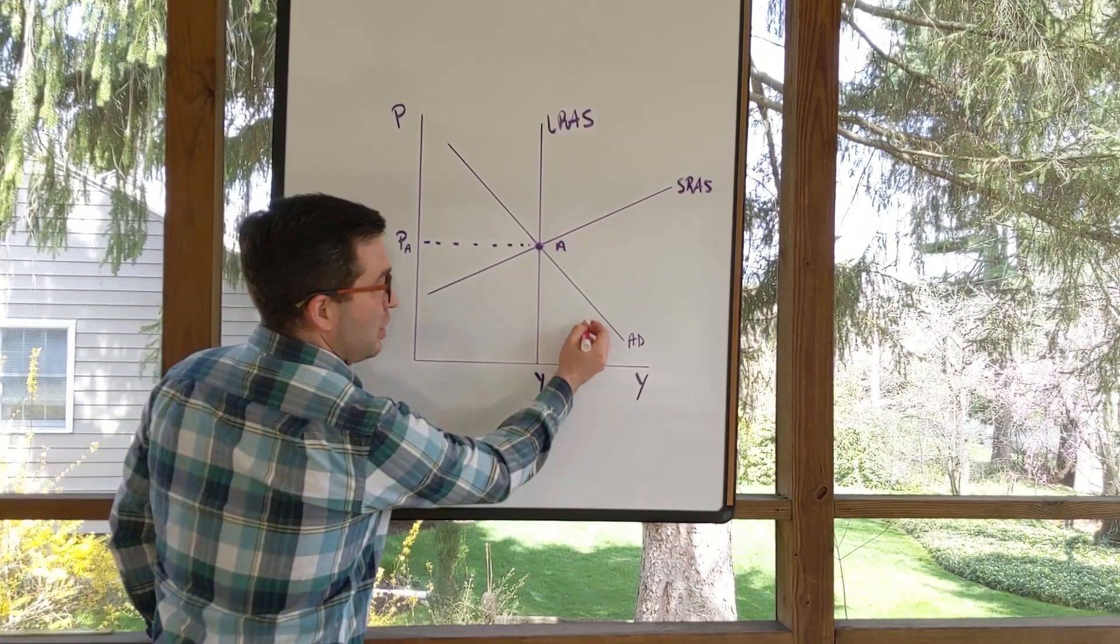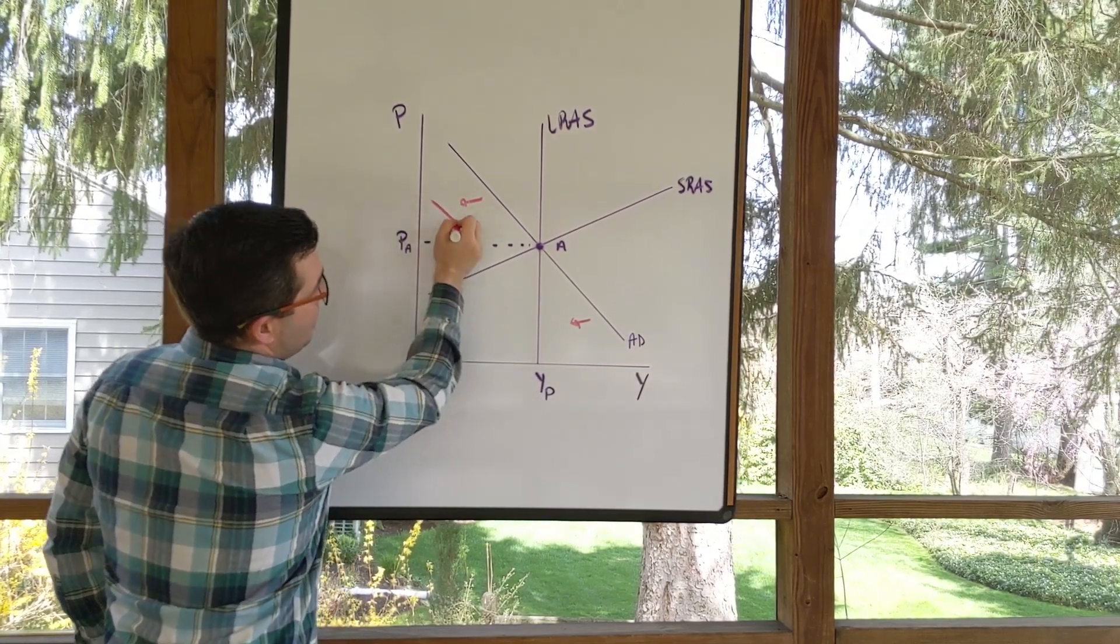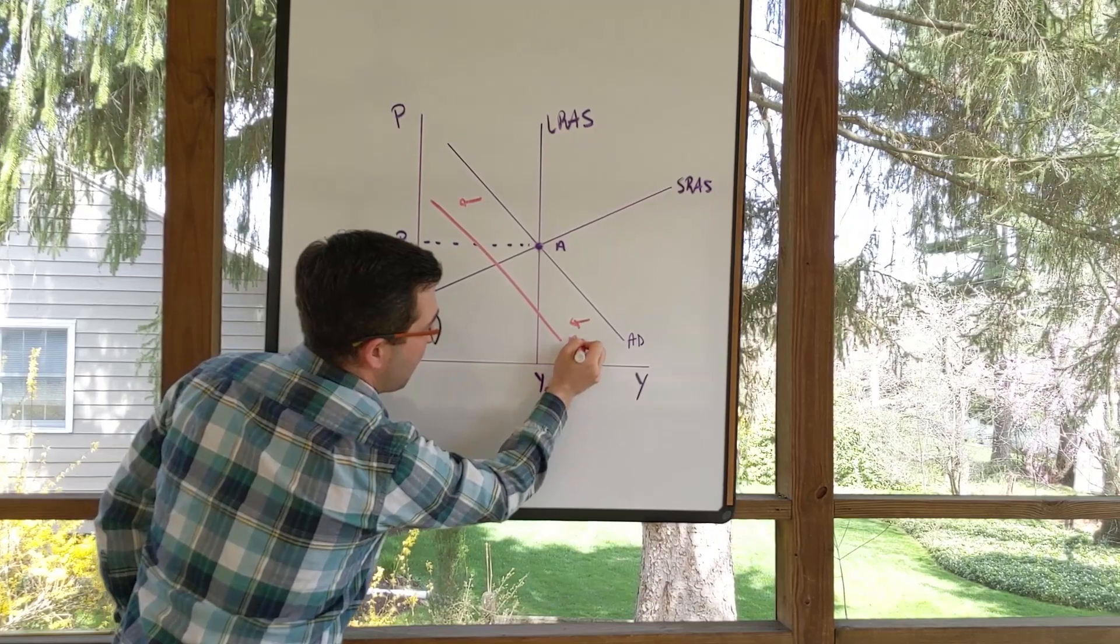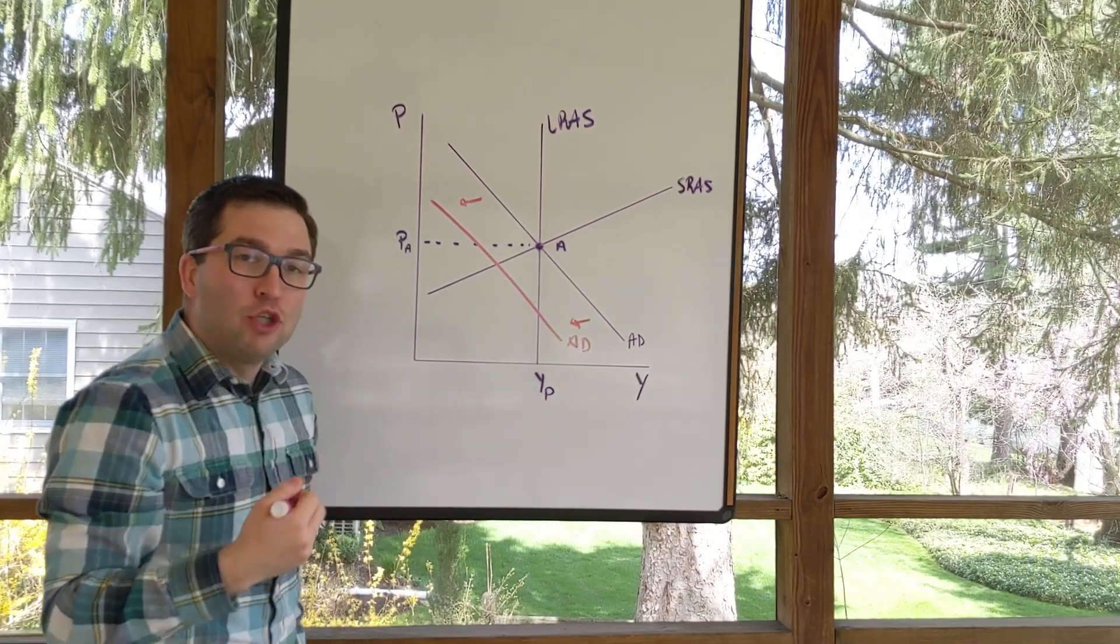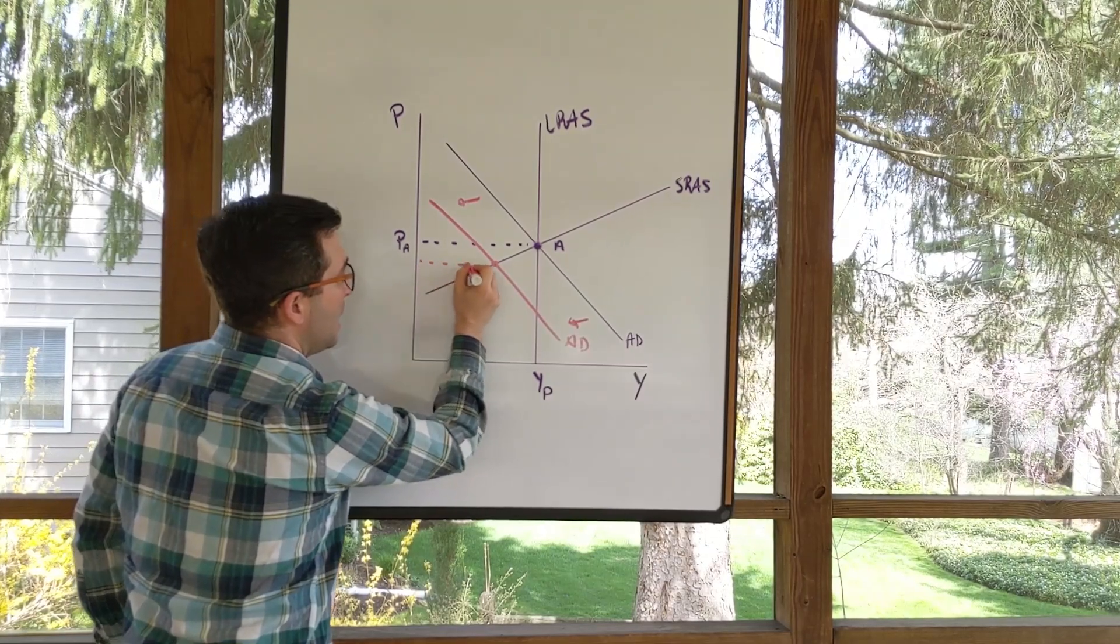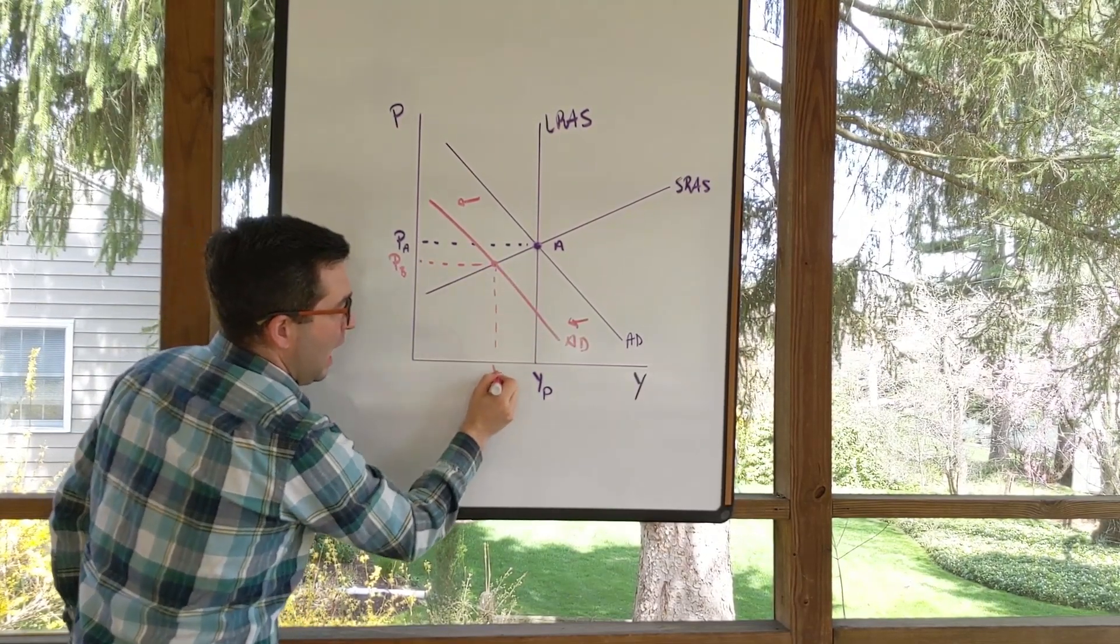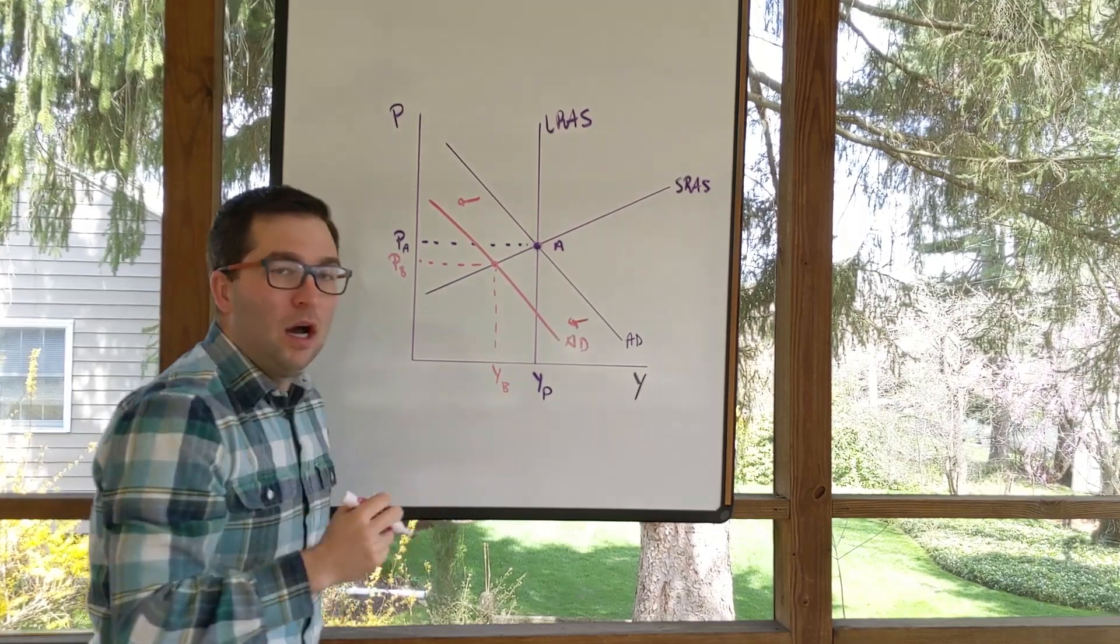So if aggregate demand were to shift to the left, let's say looking something like this, our new short-run equilibrium will be here with a lower price level and a lower level of GDP.